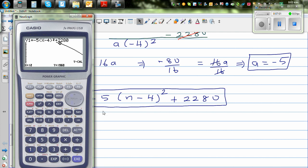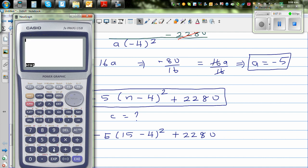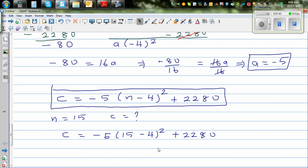So let's answer the question: when N is 15, what is C? You can do this on a calculator, but I would rather first do it without the calculator. So this is minus 5 times (15 minus 4) squared plus 2280. So let me use the calculator. Minus 5 times (15 minus 4) squared plus 2280.